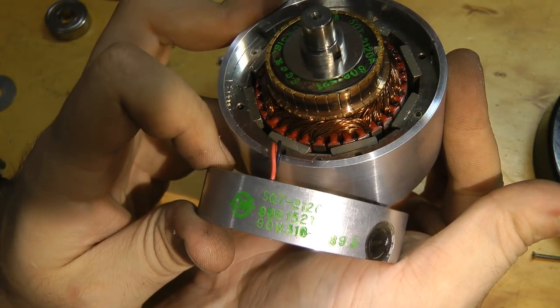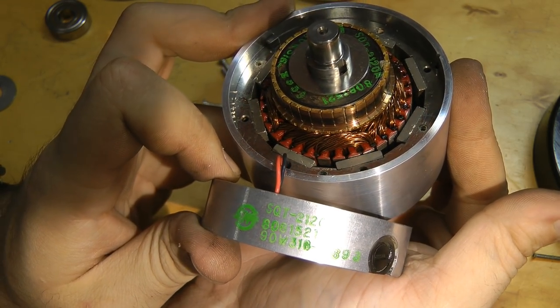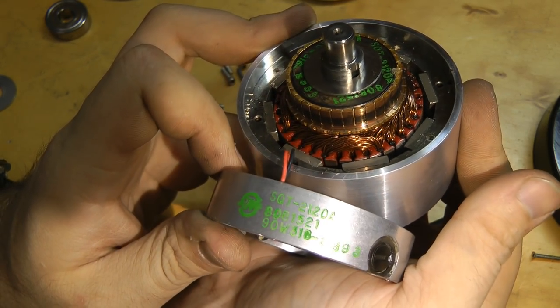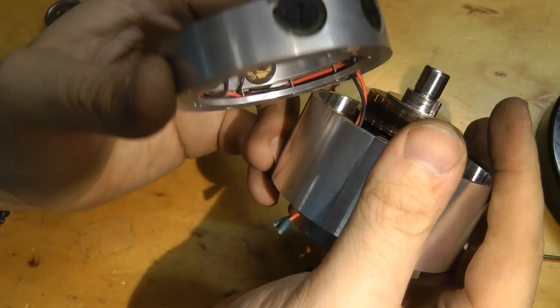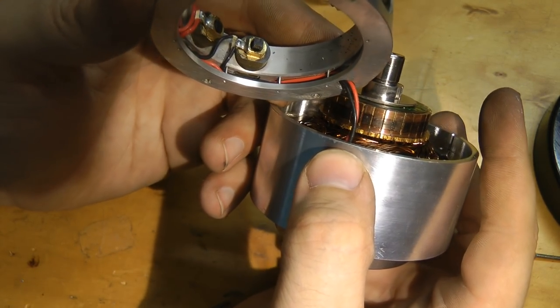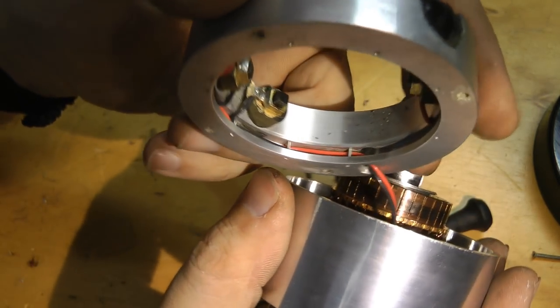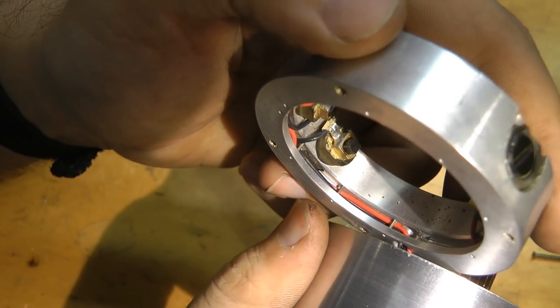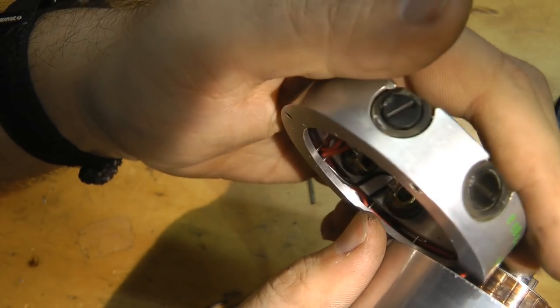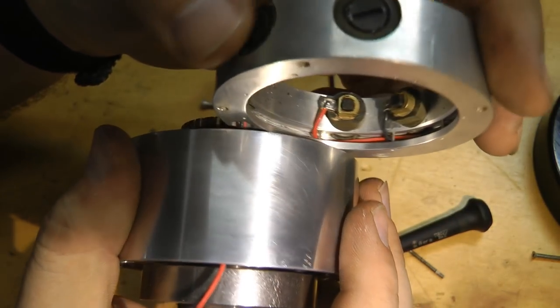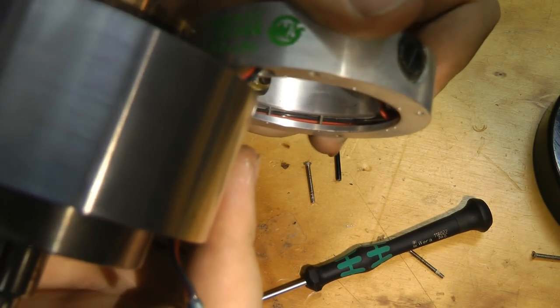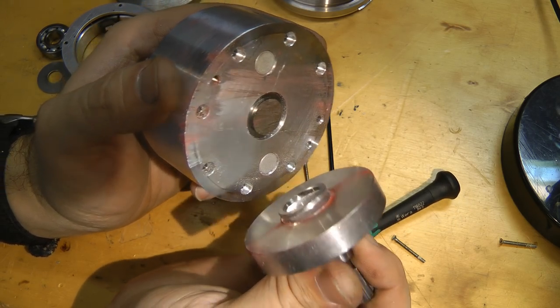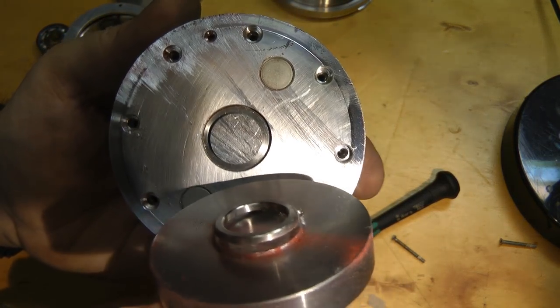Oh, we have a part number. SQT2120A. No voltages, though. I'm still curious as to what voltage this should run at. Oh, look at the attention to detail there. They've drilled and put pins in just to hold the wires. This was not cheap. Judging by how that ring came off, yes, this was definitely press fit on there.